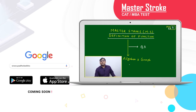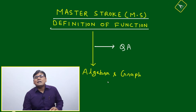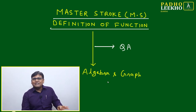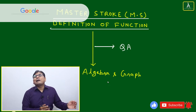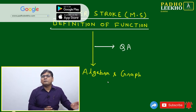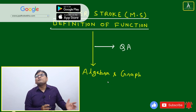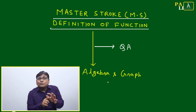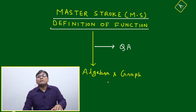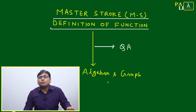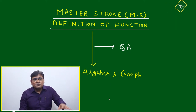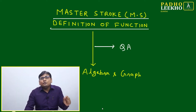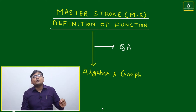Welcome to the master's talk on the definition of function. The word function is puzzling because many times we are not able to distinguish between equation, function, and relation. All three look the same — for example, a quadratic equation like 2x² + 5x + 6 can be written as a function or as a relation. In this master's talk, I will give you a few criteria and techniques to identify which relation is a function.